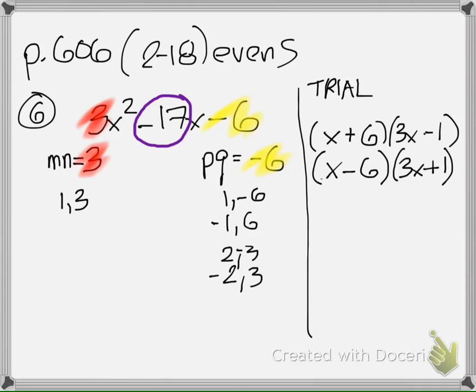When I oi this first one, I get positive 18x minus 1x, and that gives me a 17x.